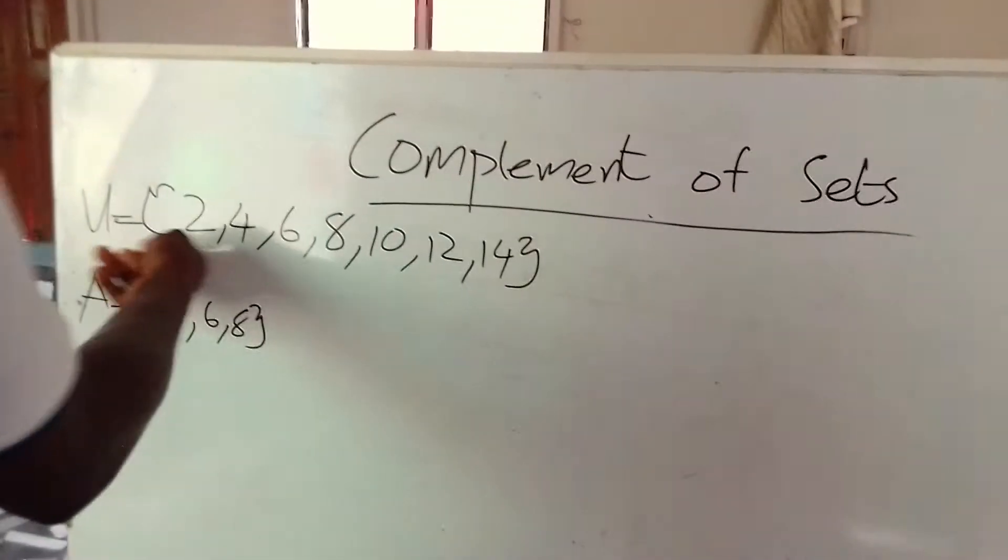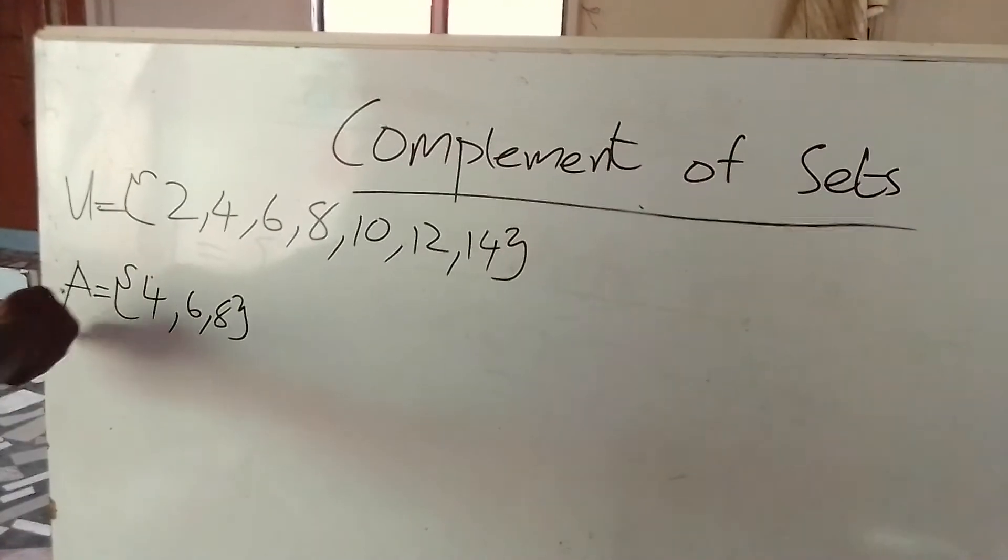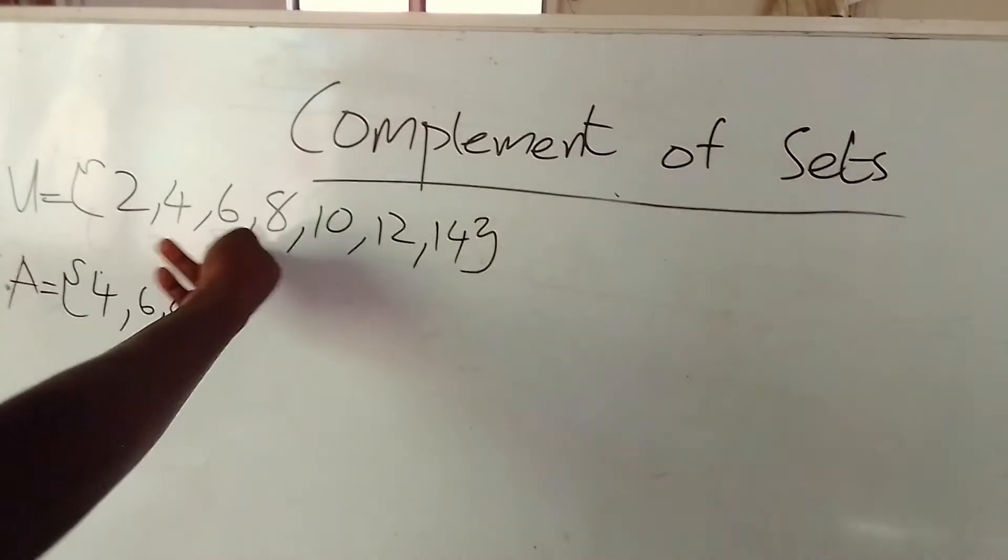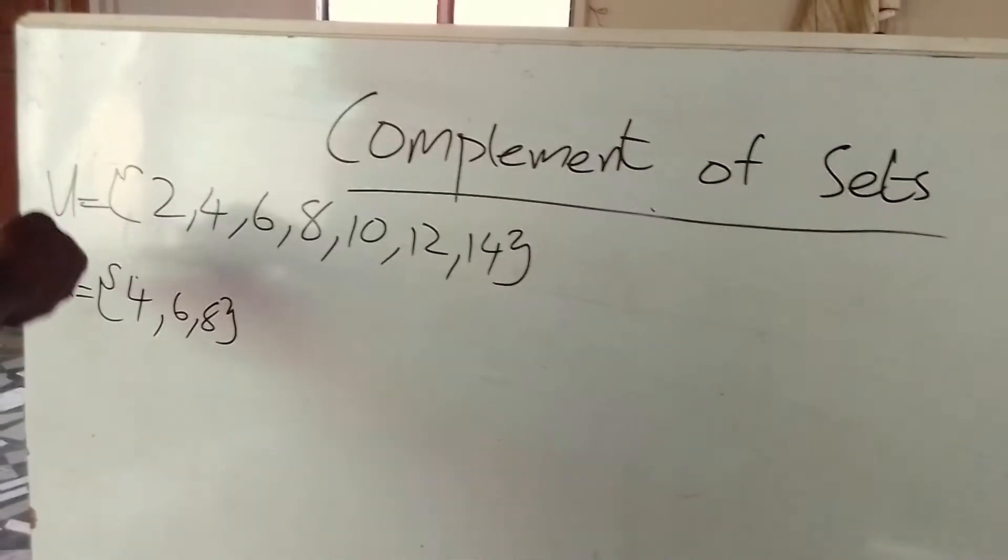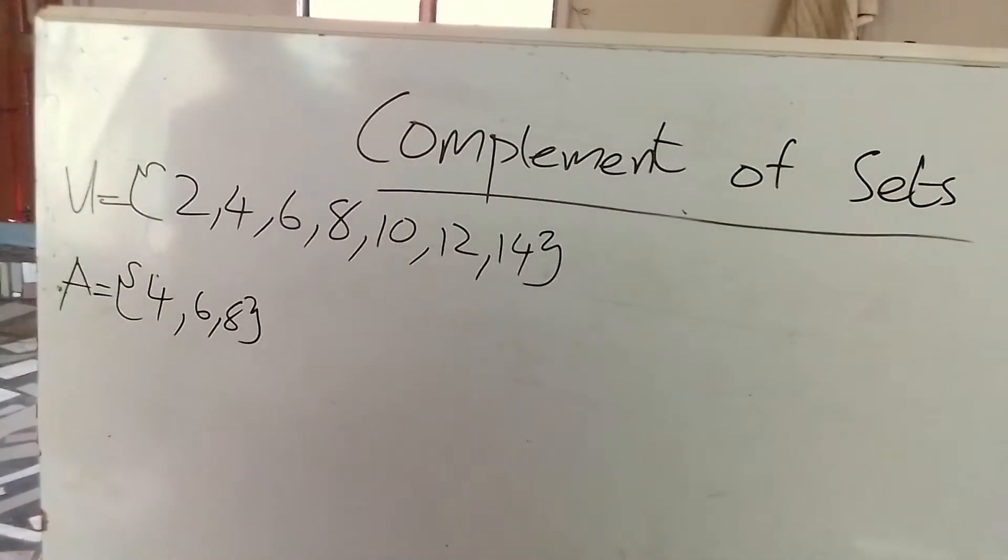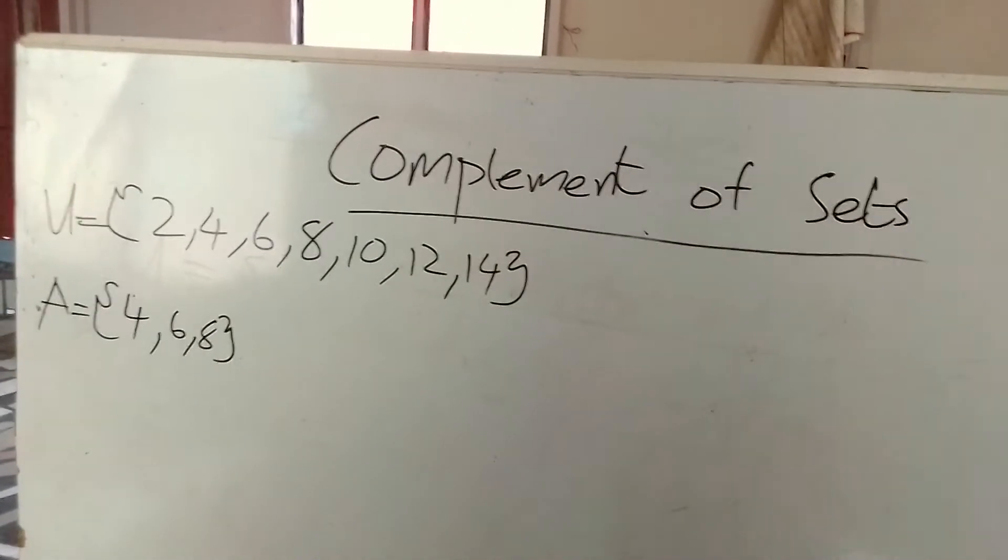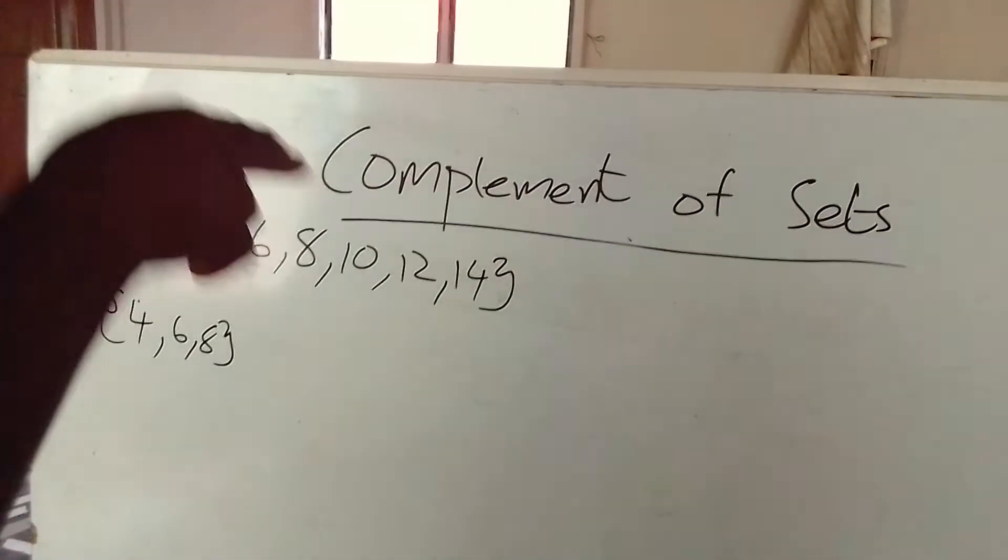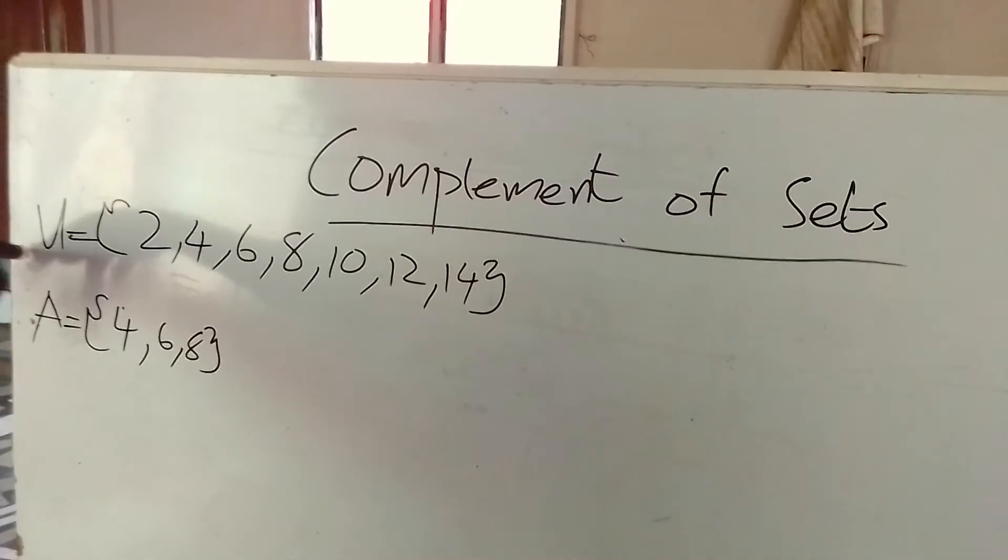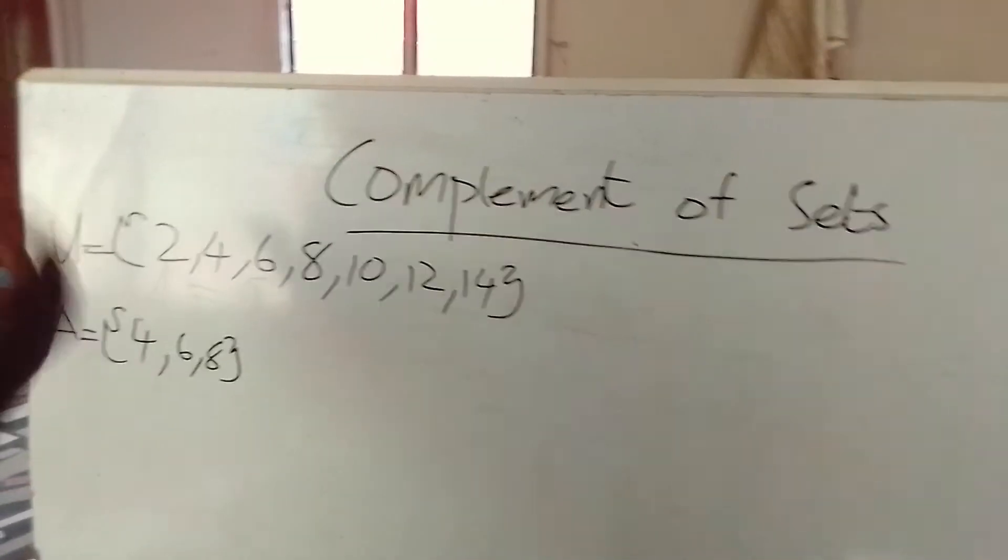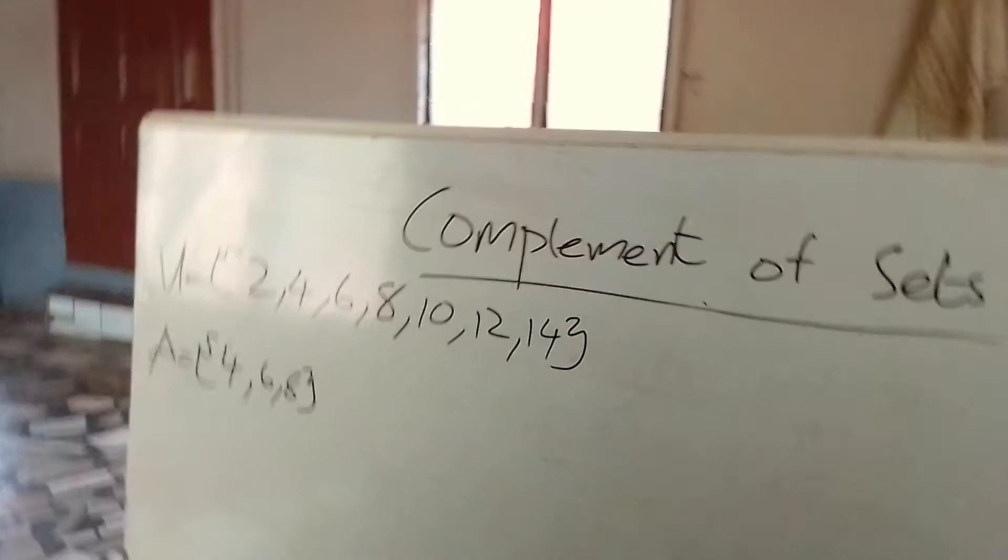This is the universal set. And I've gotten the element of A from the universal set. So, this is the subset of the universal set. And we are coming to find the formula or write the complement set of A from the universal set. But when we are coming to do that, we first take the formula down.